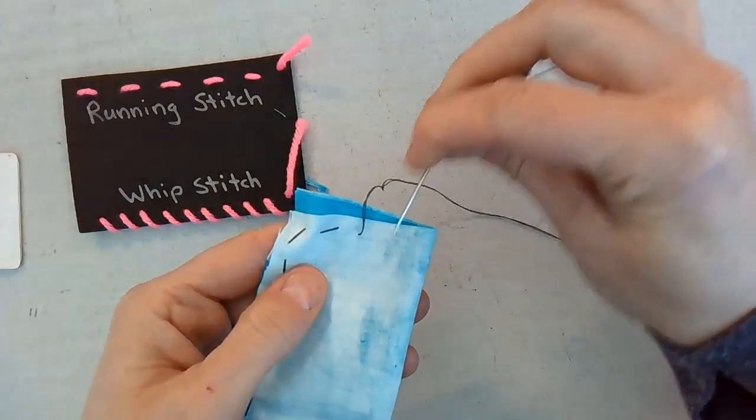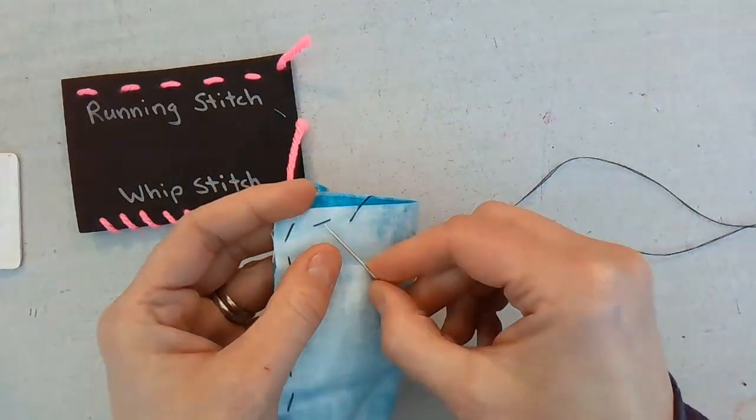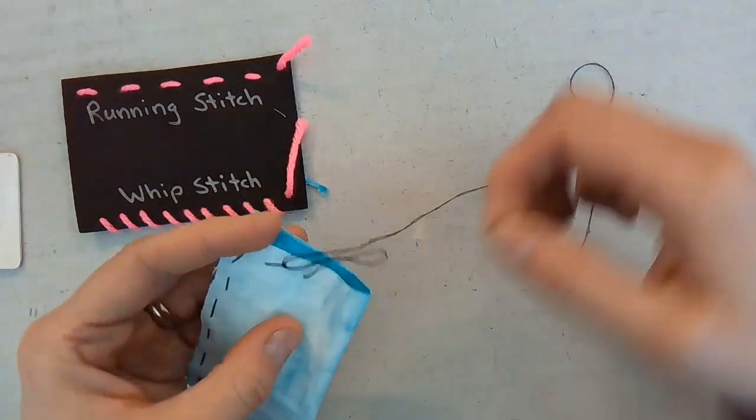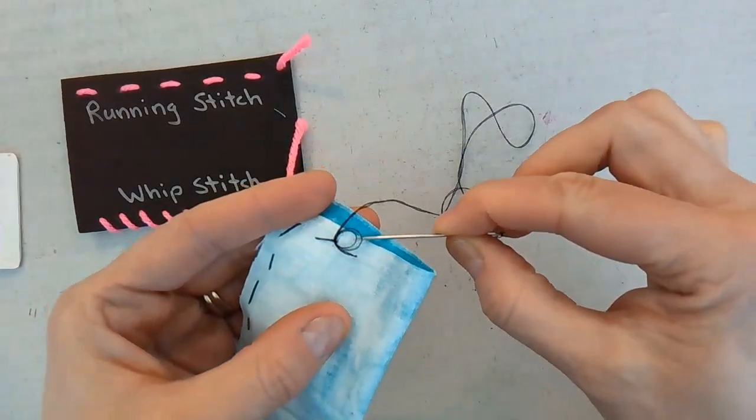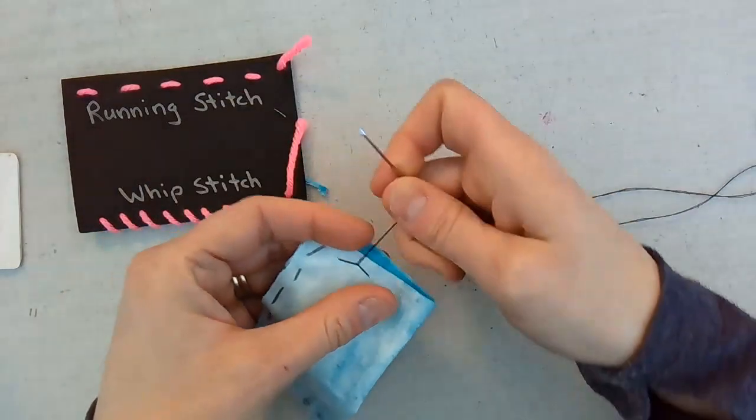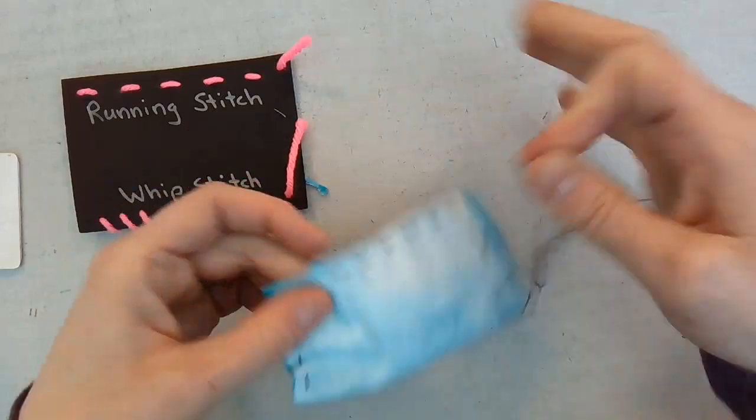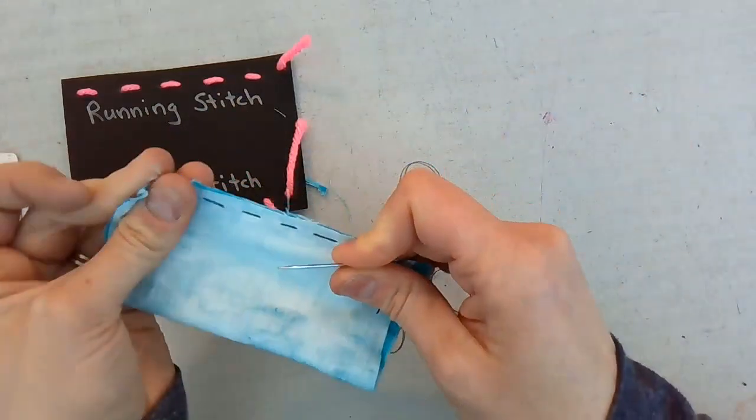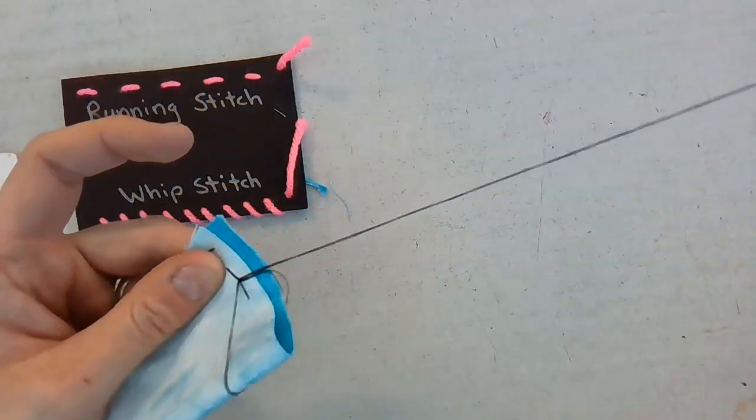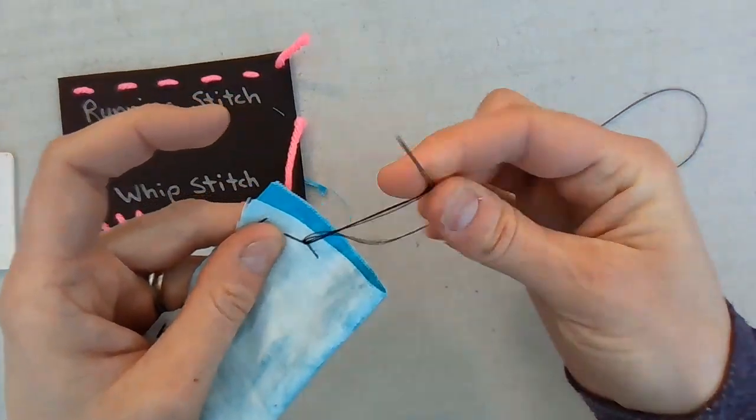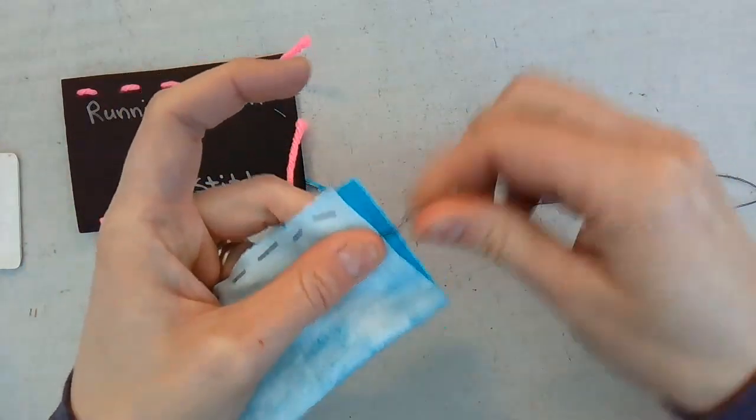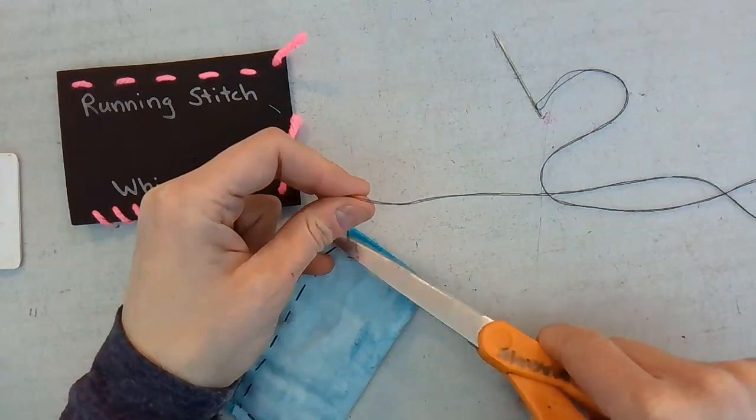Now you need to tie this off. So I'm going to go under the last stitch I did. And you see that loop right there? You want to go in that loop to create a little knot. Again, do this slowly. Do it again. You need to have a double knot. Go right in there. Slow, slow, slow. Okay, this is done. Cut off the thread.